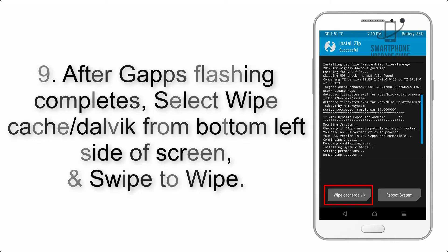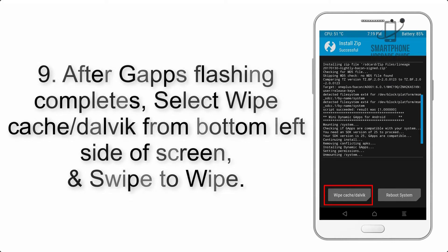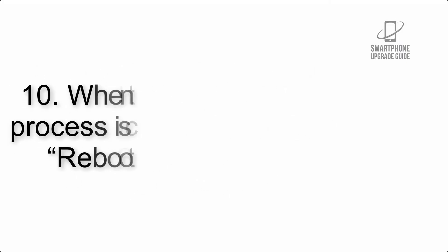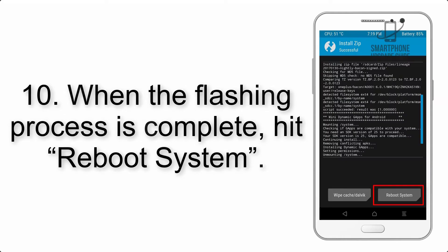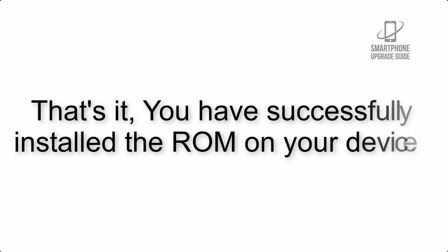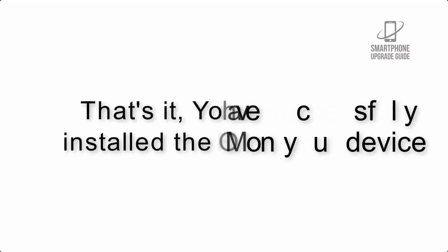Step 9: After GApps flashing completes, select Wipe Cache and Dalvik from the bottom left side of the screen and swipe to wipe. Step 10: When the flashing process is complete, hit Reboot System. That's it — you have successfully installed the ROM on your device.